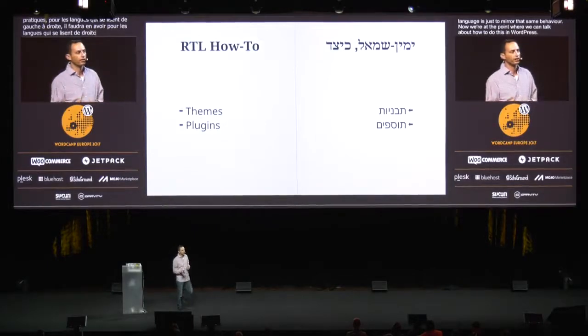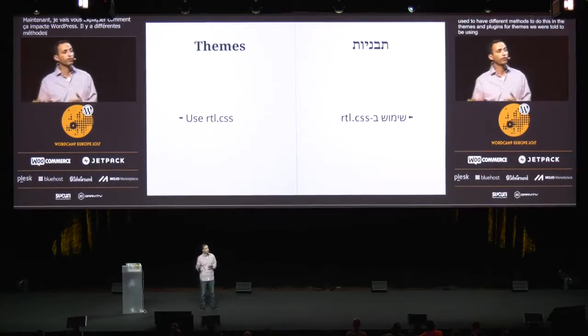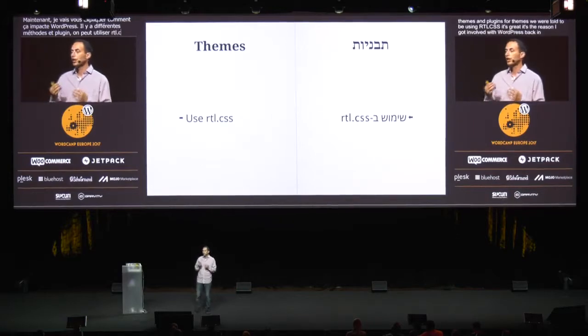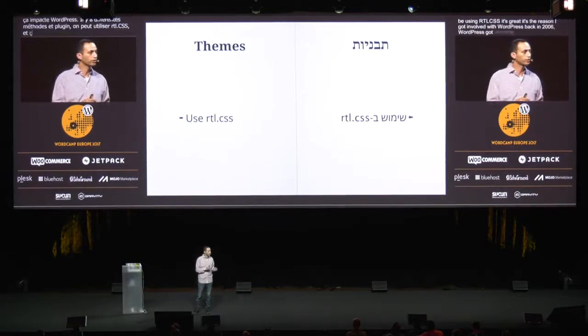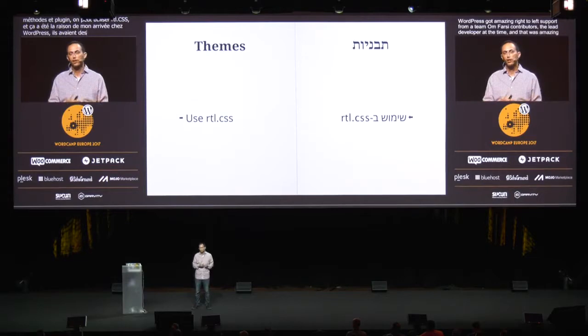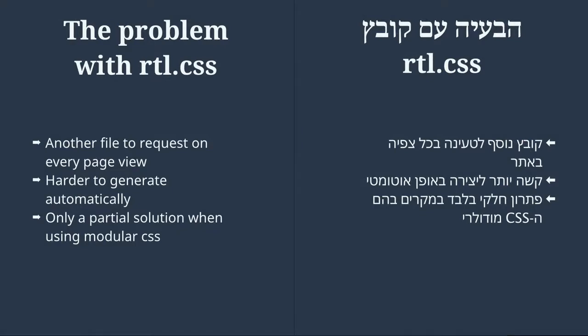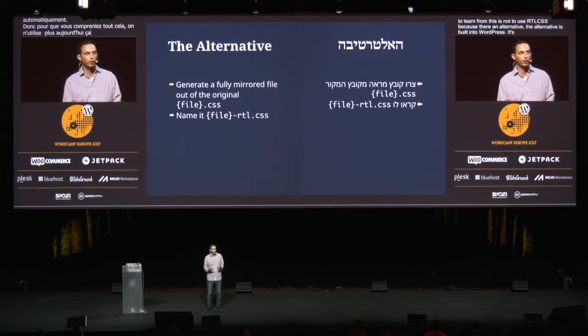So now we're at a point where we can actually talk about how to do this in WordPress. We used to have different methods for themes and plugins. For themes, we were told to use RTL CSS, which was great — it's actually the reason I got involved with WordPress. Back in 2006, WordPress got amazing right-to-left support from a team of Farsi contributors and lead developer Ryan Boren at the time. But now, RTL CSS is a method that doesn't really fit a modern workflow with themes — it doesn't fit a theme with more than one CSS file, it's another request, and it's hard to generate automatically. So what I'd like us to take away is just not to use RTL CSS, because there's an alternative built into WordPress that's simpler to use and usually provides a better right-to-left experience.